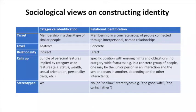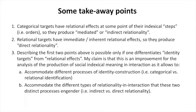I summarized the main difference between the two ways of self and other identification in a table. To sum up with some takeaway points: categorical targets have relational effects at some point of their indexical steps — that is, indexical orders — so they produce mediated or indirect relationality. Relational targets in turn have immediate, inherent relational effects, so they produce direct relationality. Describing these two points is possible only if one differentiates identity targets from relational effects. This is an improvement for the analysis of the production of social indexical meaning in interaction, as it accommodates both different processes of identity construction — categorical versus relational identification — and the different types of relationality these two distinct processes engender: indirect versus direct relationality.